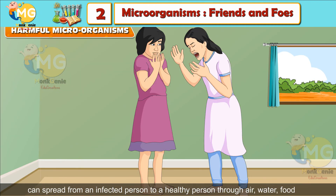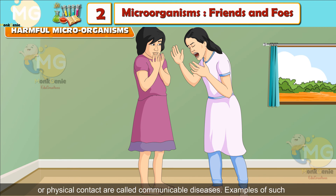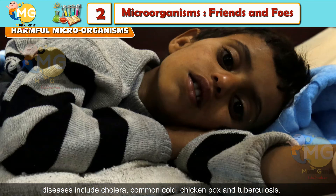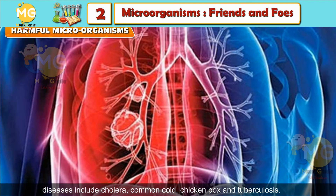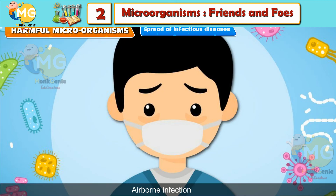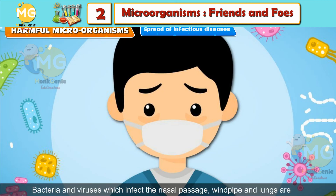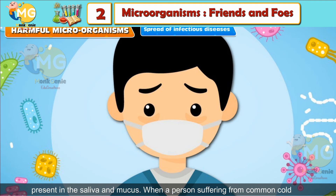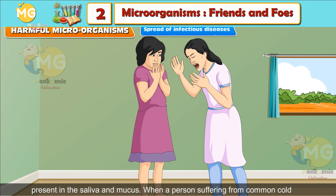Microbial diseases that can spread from an infected person to a healthy person through air, water, food or physical contact are called communicable diseases. Examples include cholera, common cold, chicken pox and tuberculosis. Spread of infectious diseases — Airborne infection: Bacteria and viruses which infect the nasal passage, windpipe and lungs are present in the saliva and mucus. When a person suffering from common cold sneezes, fine droplets of moisture carrying thousands of viruses are spread in the air, and the virus may enter the body of a healthy person while breathing.